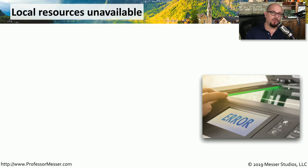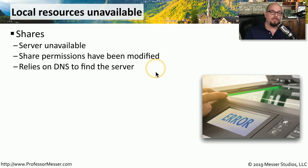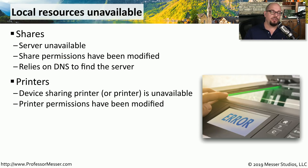There are many different kinds of resources on your local network that you may need to troubleshoot. For example, if you're troubleshooting access to a Windows share and you're not able to access it, it could be because the server is currently unavailable, or someone may have modified your permissions to access that share. It's also important to consider whether your computer can find that server using DNS. Connecting to a printer is very similar — if the printer is unavailable or permissions have been changed, you may not be able to print.